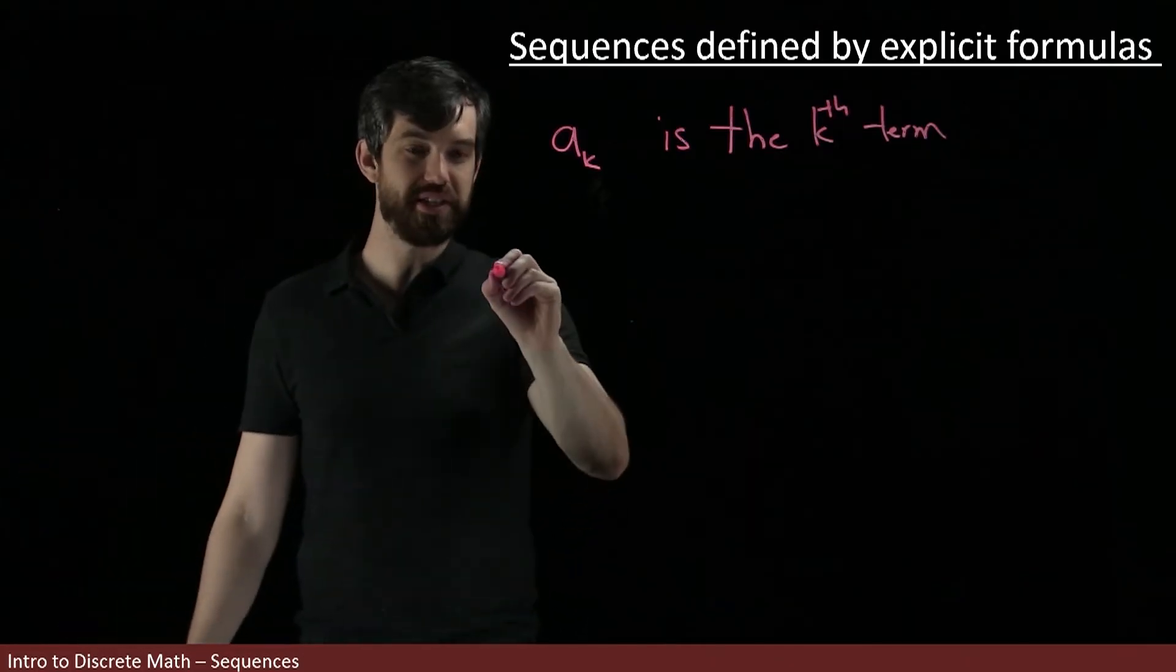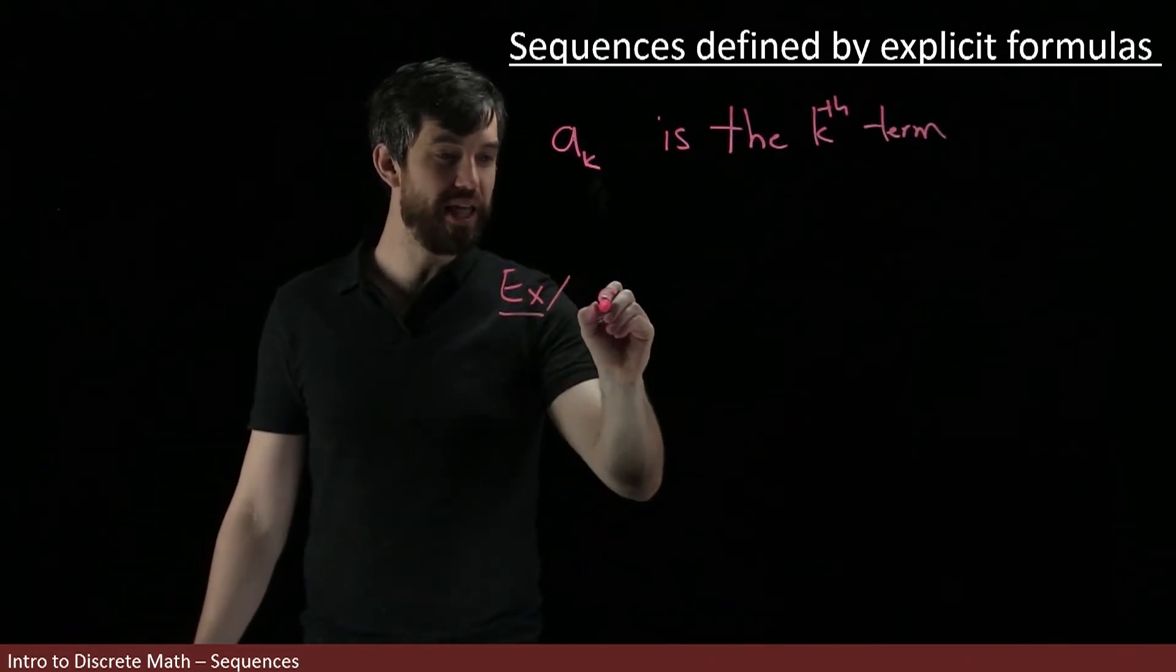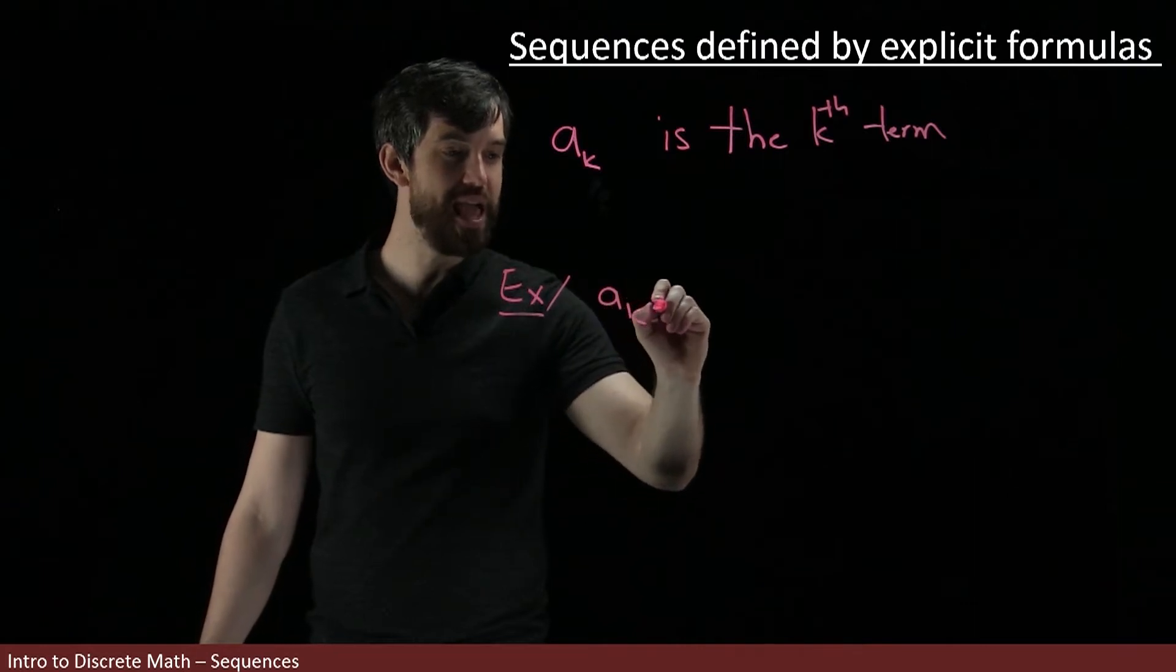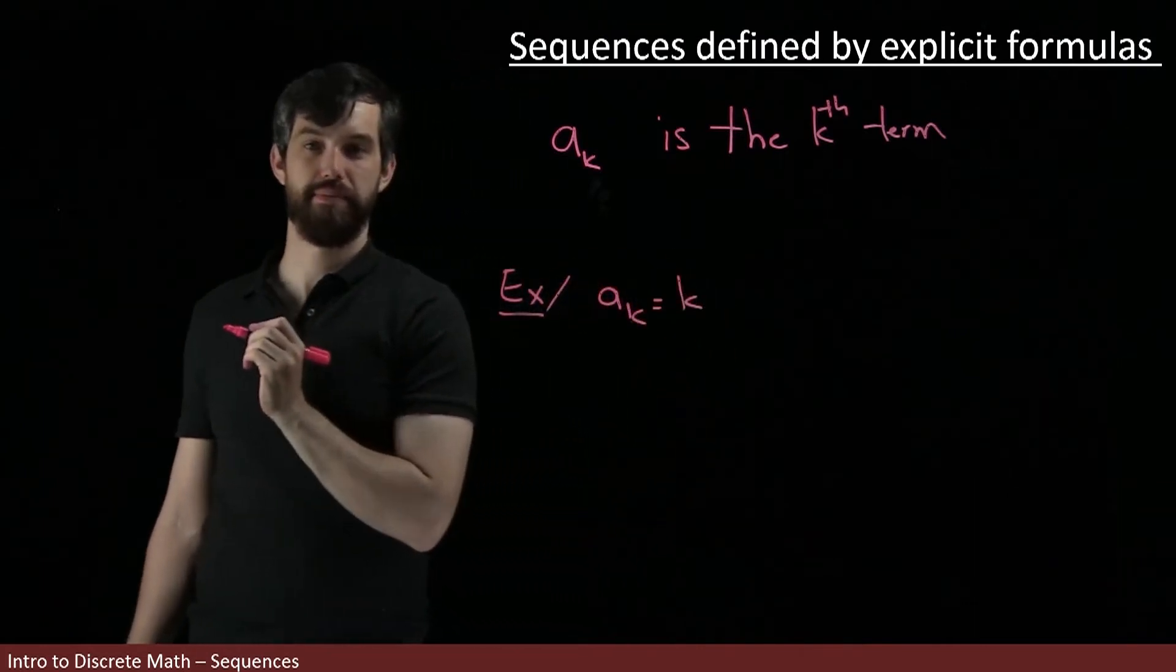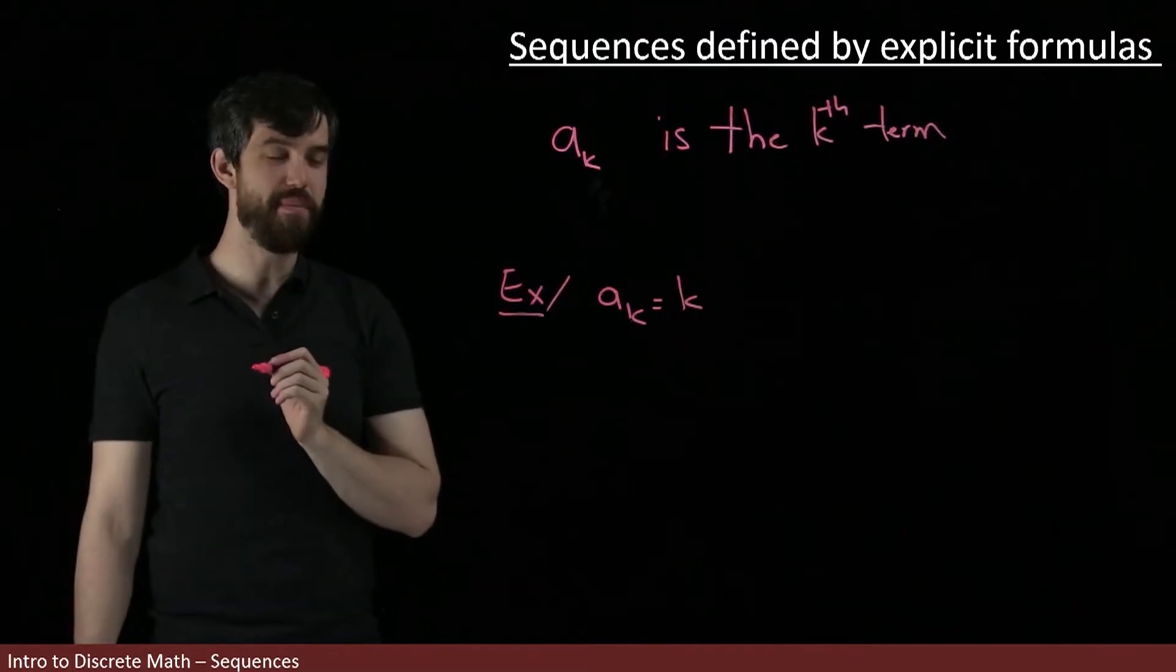For example, a sub one is the first term, a sub two is the second term, and generally a sub k is the k-th term. So I want to give as an example this: I'm going to claim that a sub k is just equal to k. Okay, so this is like the simplest one that I can imagine.